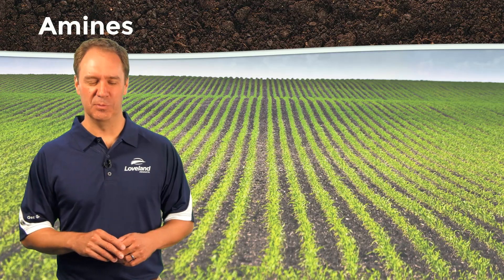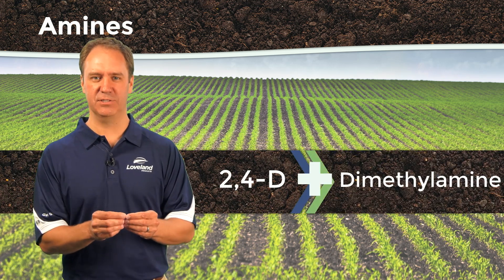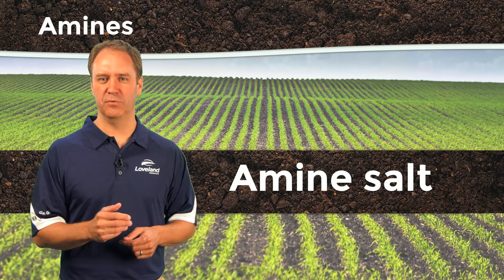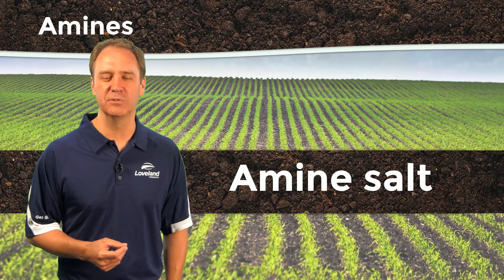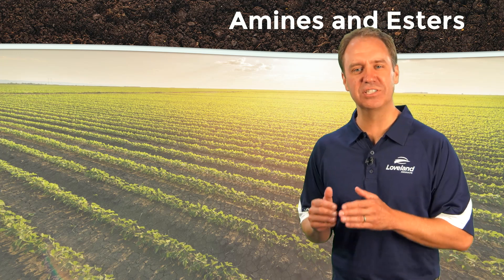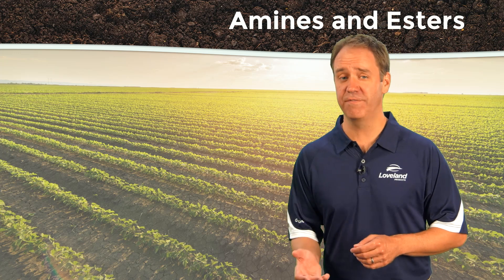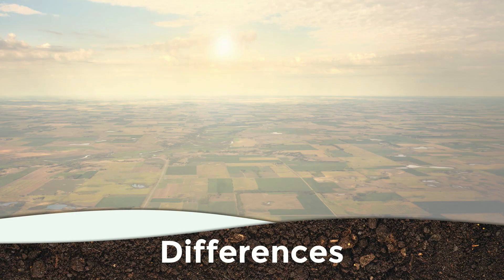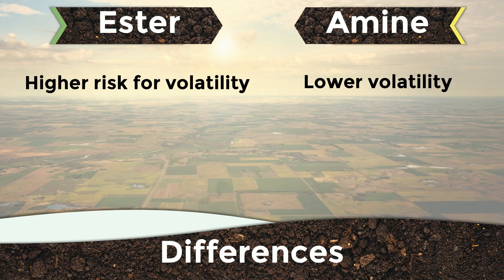2,4-D amines are produced when the 2,4-D acid is reacted with the dimethylamine base to form an amine salt. Because this form of 2,4-D is easily mixed with water, no solvents or emulsifiers are needed. Although amines and esters are both 2,4-D herbicides, they have distinct differences that make them more or less favorable for certain environments and cultural practices. One of the biggest differences between the two is that esters have a higher vapor pressure and volatize more than amines. This volatility can increase significantly in high temperature, high wind conditions. During this kind of weather, amines are the better choice for any 2,4-D application, particularly around specialty crops where drift and volatility are always a concern.